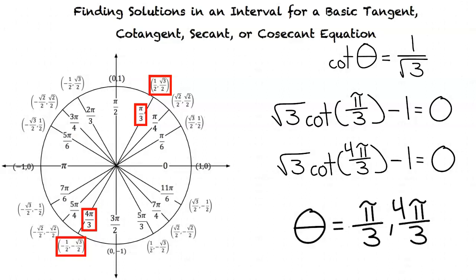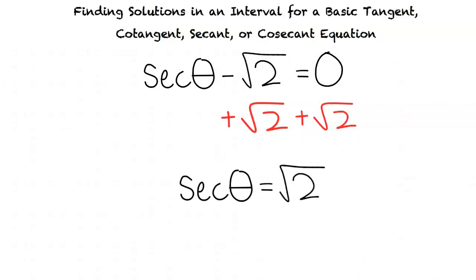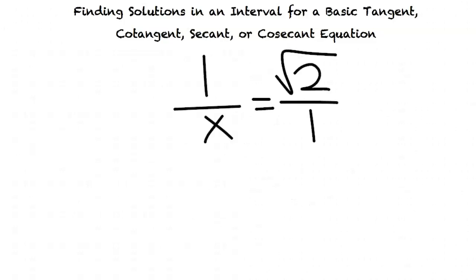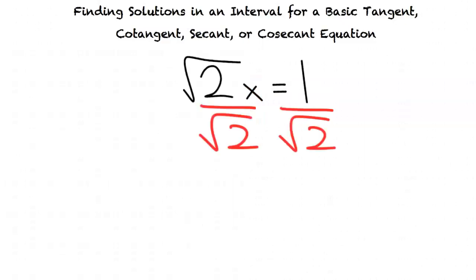For our next example, we will use the following secant equation: secant theta minus square root of 2 equals 0. For the first step, we add square root of 2 to both sides to isolate secant theta, giving secant theta equals square root of 2. Since secant theta equals 1 over x, we have 1 over x equals square root of 2. To streamline this, we convert by cross-multiplying, getting square root of 2 times x equals 1, then divide both sides by square root of 2, giving x equals 1 over square root of 2.